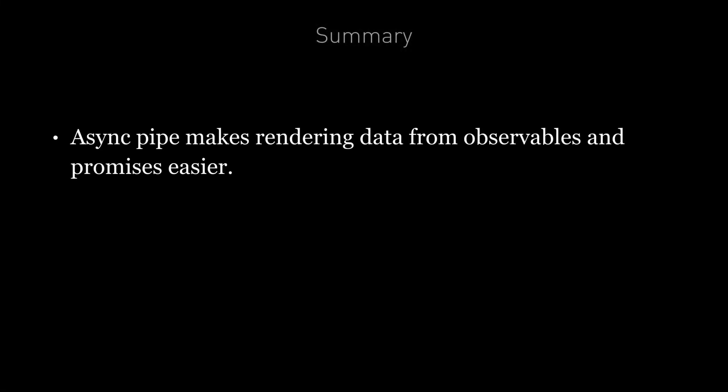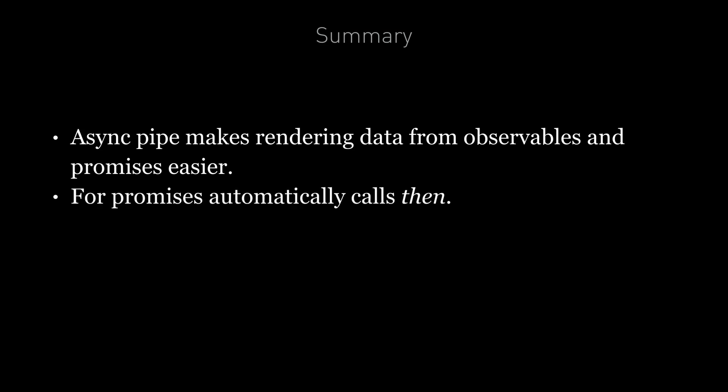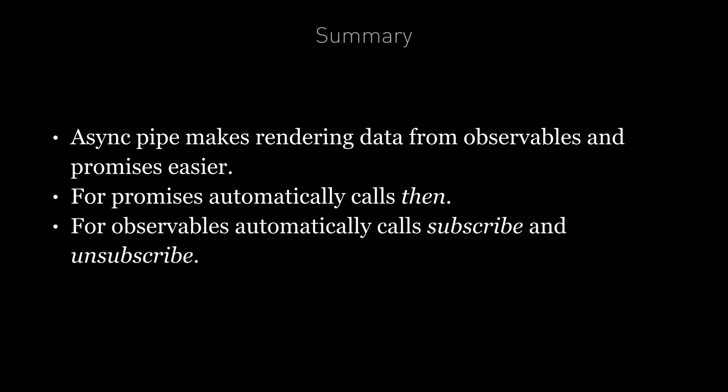To summarize: async pipe is a convenience function which makes rendering data from observables and promises much easier. For promises it automatically adds a then callback. For observables it automatically subscribes to the observable, renders the output, and then unsubscribes when the component is destroyed — so we don't need to handle the cleanup logic ourselves. That's it for built-in pipes. Next up we're going to look at creating our own custom pipe.